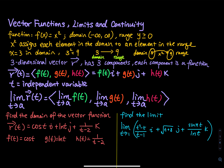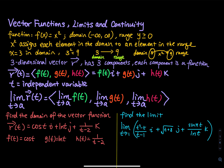How about in a three-dimensional vector? Now we are talking about a three-dimensional vector. A vector has three components, and each component is a function. So we have a vector function r of t equal to f(t), g(t), h(t), which equals f(t) times i, g(t) times j, and h(t) times k. And t is the independent variable.